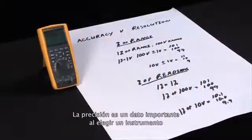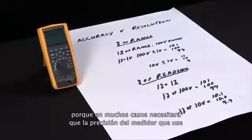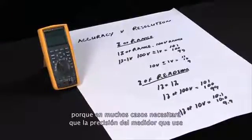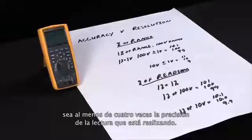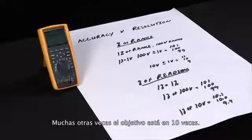Accuracy is an important specification when selecting an instrument because in many cases you want the accuracy of the meter you're using to be at least four times the accuracy of the measurement you're taking. A lot of times ten times is actually the goal.